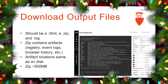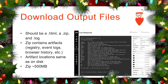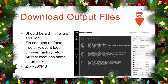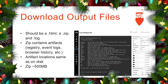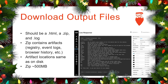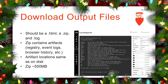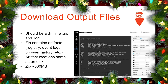Then we've got a series of output files. In the same directory that you ran Velociraptor from, it's going to create an HTML report, a zip file, and a log. The zip file will contain your artifacts — your registry, your event logs, your browser history, whatever you told it to collect. Artifact locations will be the same as on disk, so if you're looking for something in Windows/System32/config, it'll be in that same folder tree under the C folder in the zip. It should be about 500 megabytes depending on what you've told it to collect.